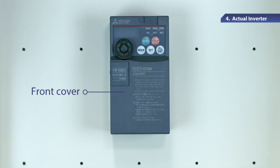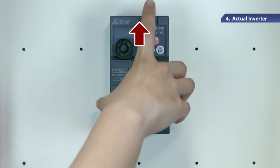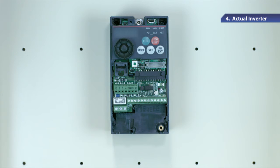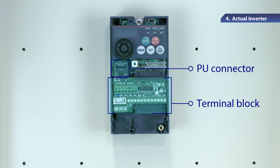To remove the cover, hold and pull it toward you as indicated with an arrow. After the front cover is removed, you can see the terminal block and the PU connector for connecting external equipment.